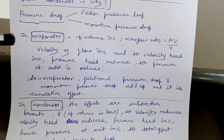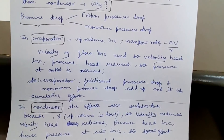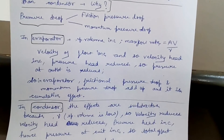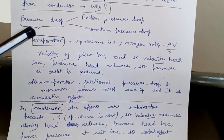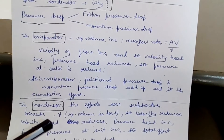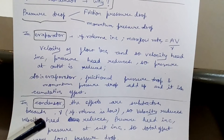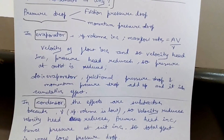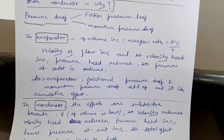In summary: in the evaporator, friction and momentum pressure drops are both negative so there is a cumulative, additive effect and the pressure drop is much more significant. In the condenser, friction pressure drop is negative but momentum pressure drop is positive, so the net pressure drop is low.